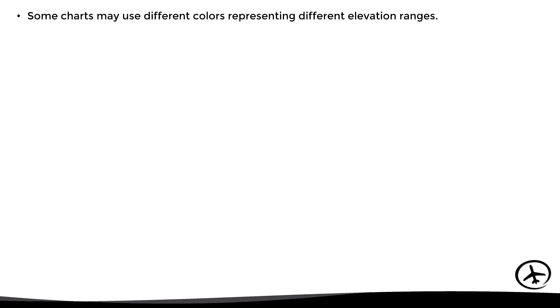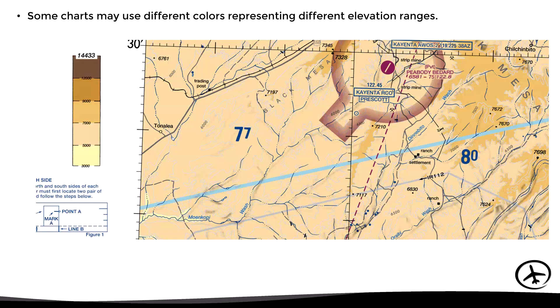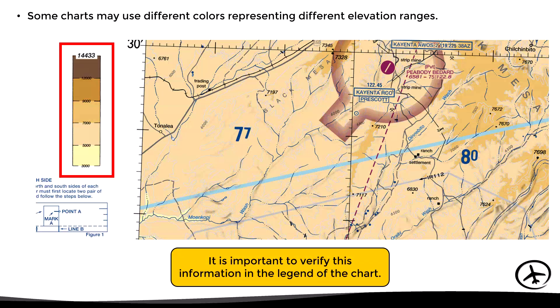It is important to mention that some charts may use different colors to represent different elevation ranges. In this sectional chart, for example, the color gradients used are different from those of the operational charts we just saw. It is therefore important to verify this information in the legend of the chart in order to properly interpret the terrain relief in a certain area.